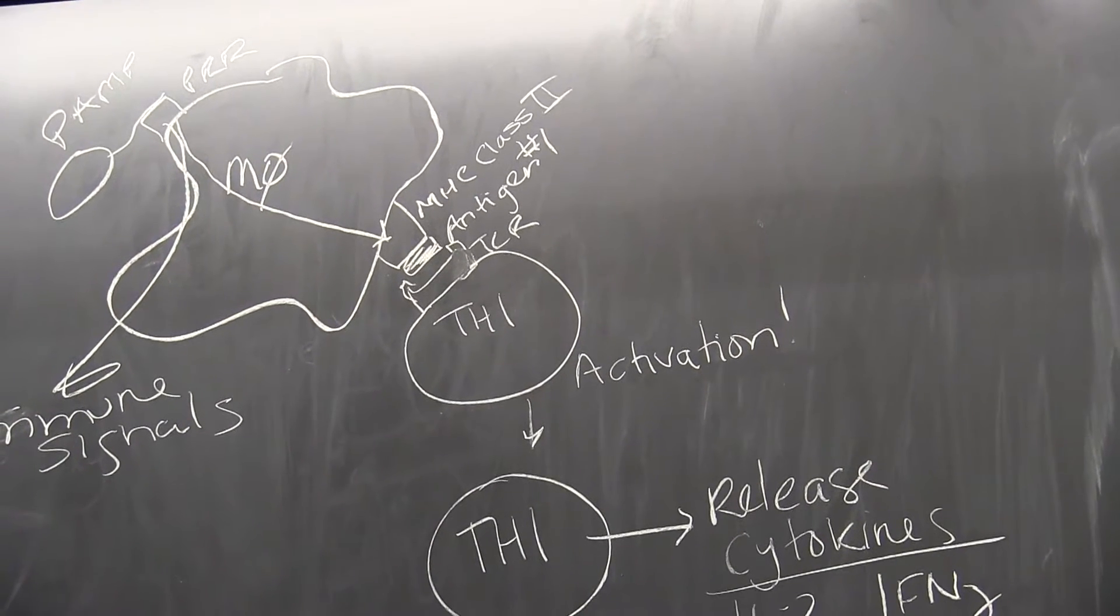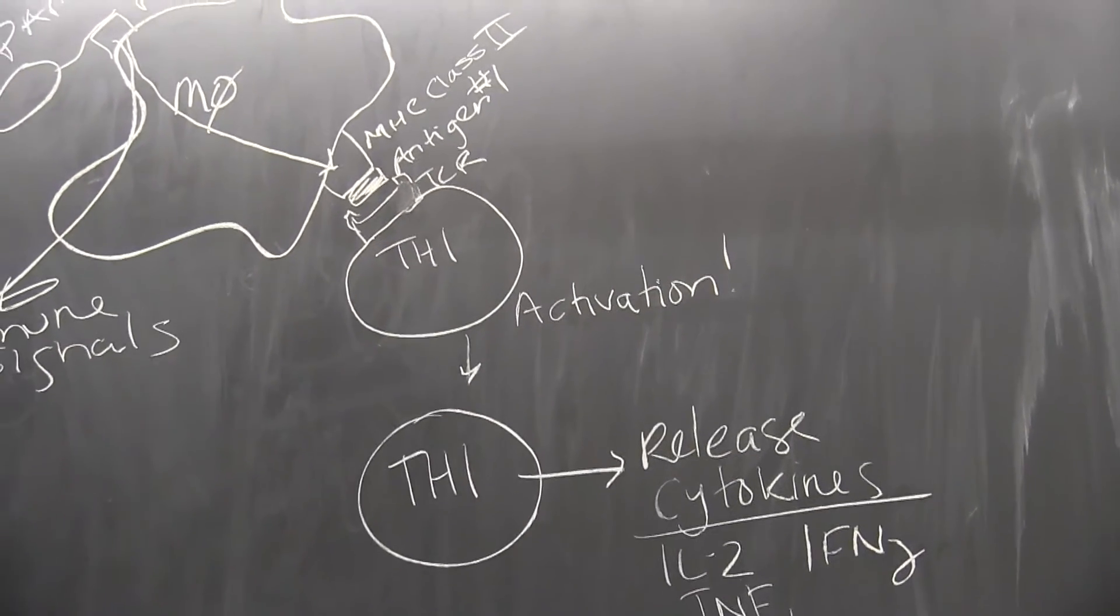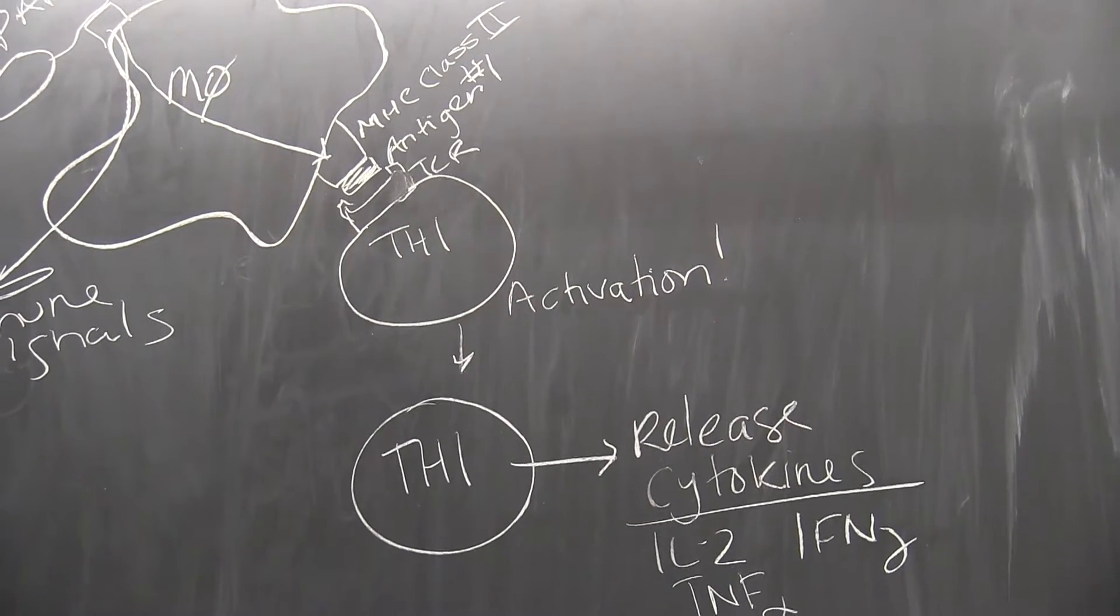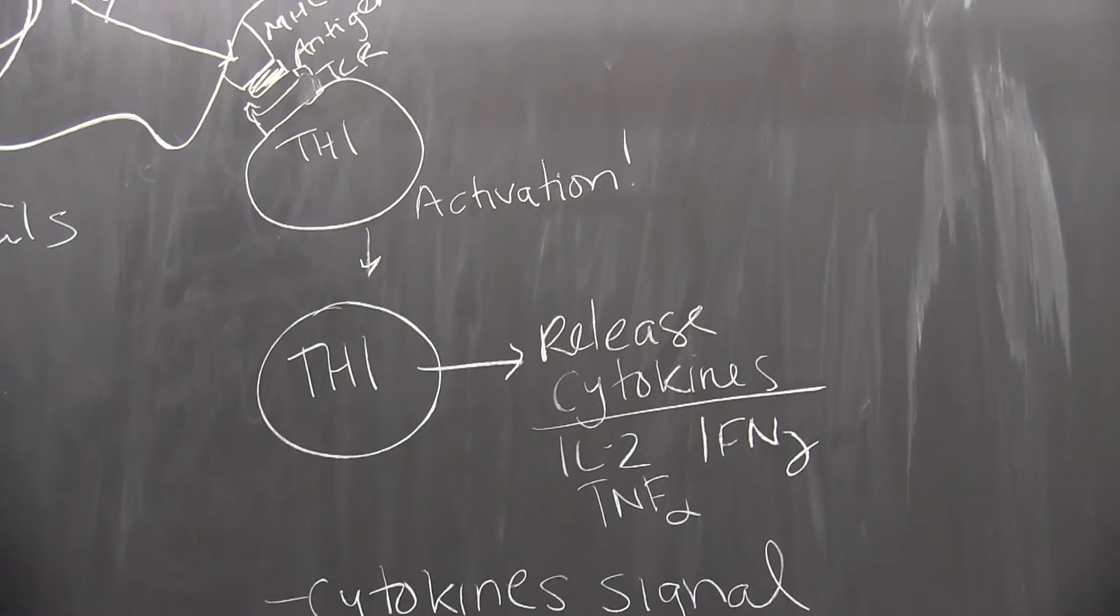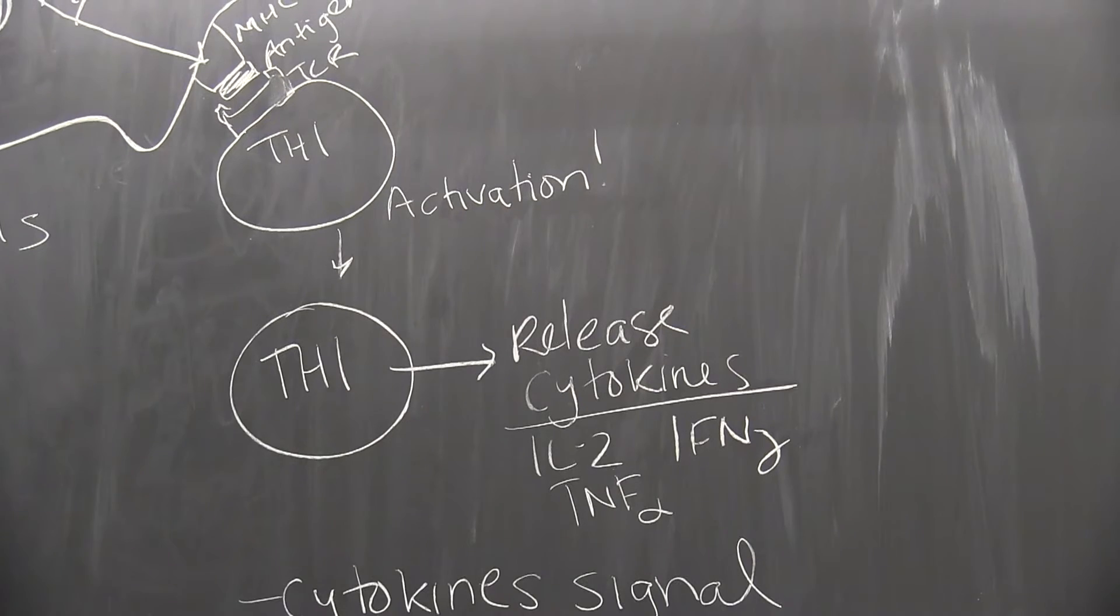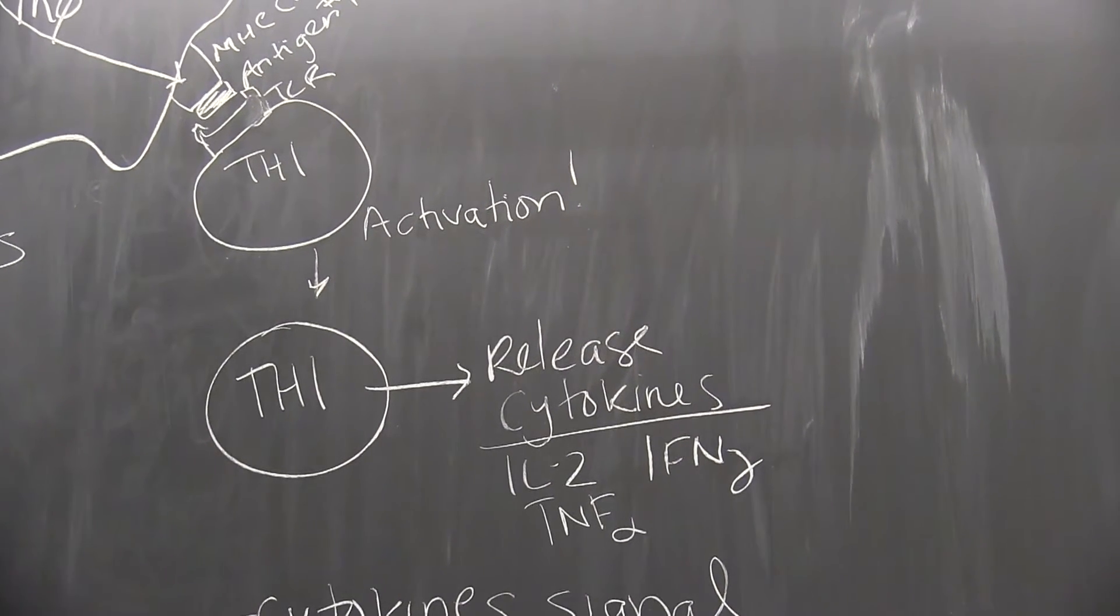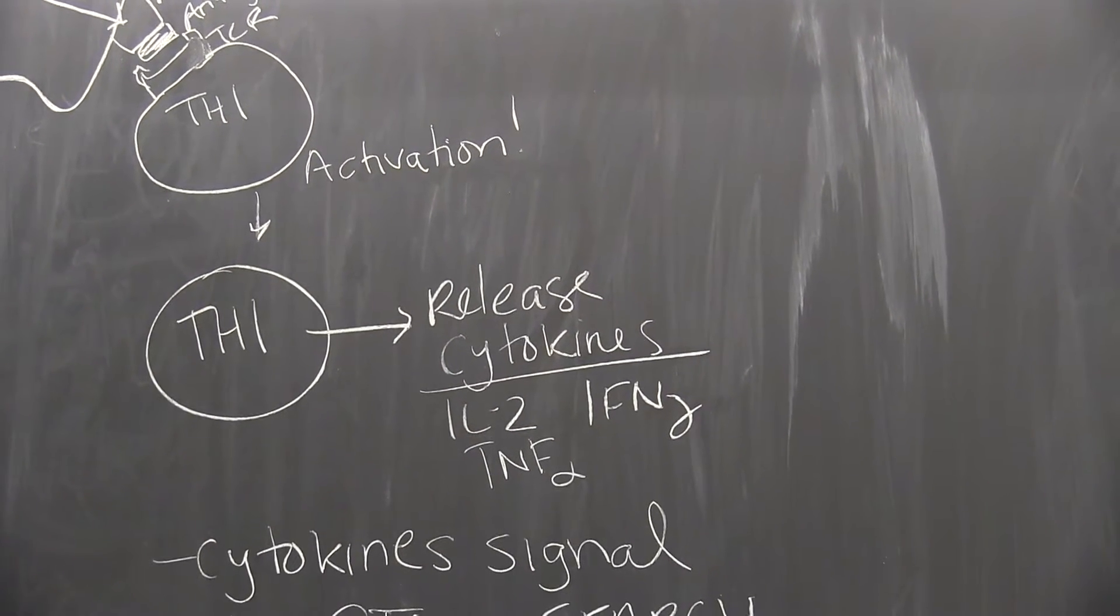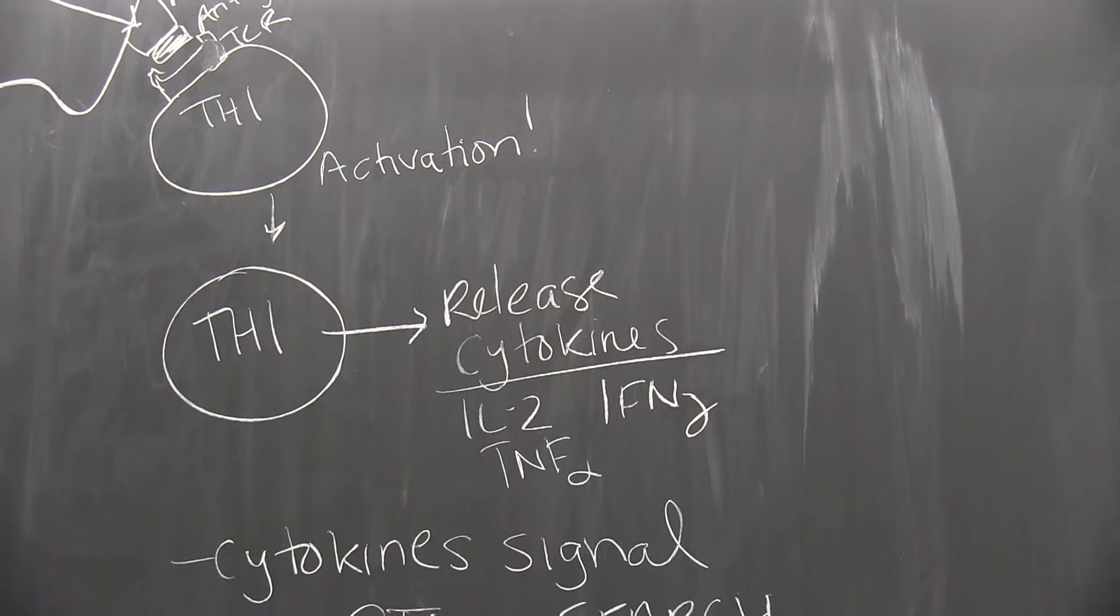So when all three of these things bind together, we have TH1 activation. This causes the TH1 to divide, produce more of itself, and it also causes it to release cytokines. In this case, we're going to release cytokines to activate killer T cells, or cytotoxic lymphocytes. The cytokines that do that are IL-2, interferon gamma, and TNF alpha, to name a few. These are the ones that you'll have to memorize for this class.